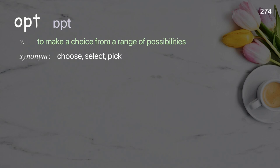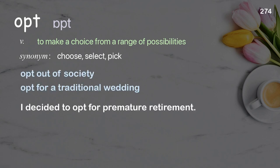Opt: to make a choice from a range of possibilities. Examples: opt out of society; opt for a traditional wedding. I decide to opt for premature retirement.